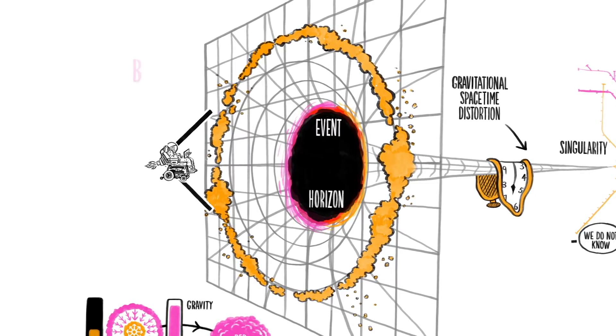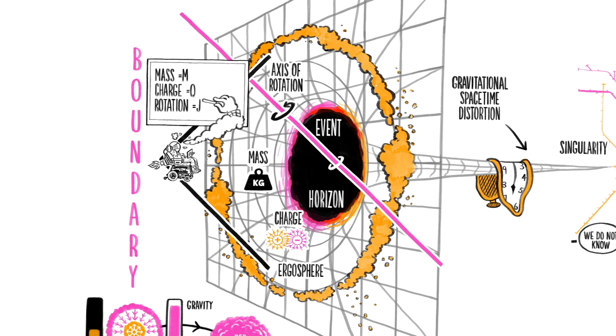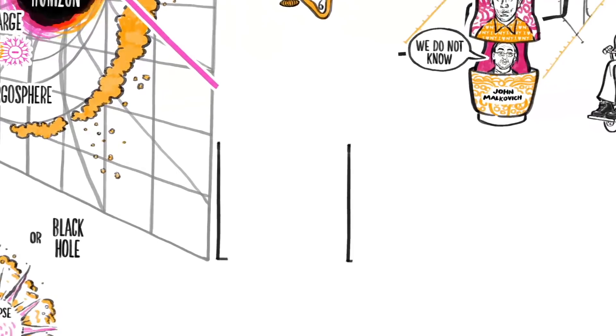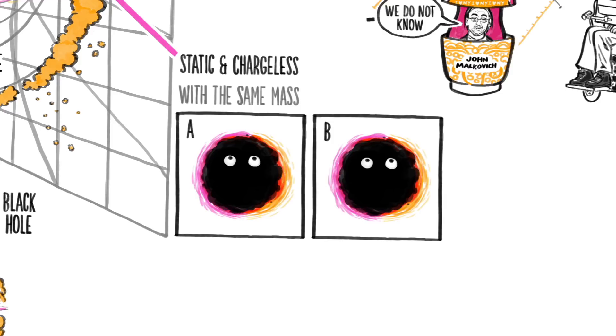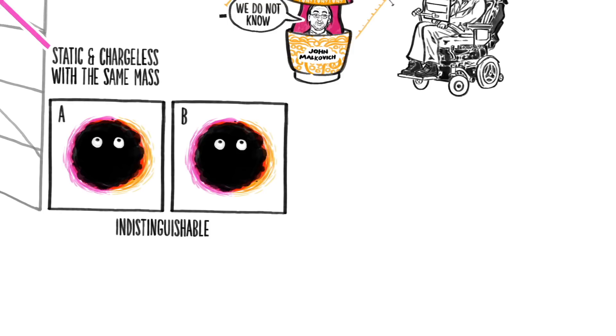From the outside, the only properties of a black hole that we can discern are its mass, charge, and state of rotation. Two static chargeless black holes with the same mass are indistinguishable to us. This is a statement that black holes have no hair.